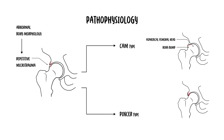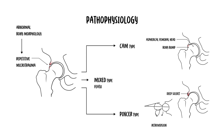A pincer-type lesion involves over-coverage of the femoral head by the acetabulum — essentially a deep socket or retroversion — resulting in linear contact between the labrum and femoral neck. A mixed type also exists, where most patients have features of both CAM and pincer impingement. Over time, this abnormal contact can cause labral tears, chondral delamination, and progressive joint degeneration.